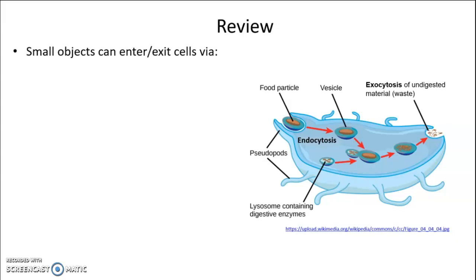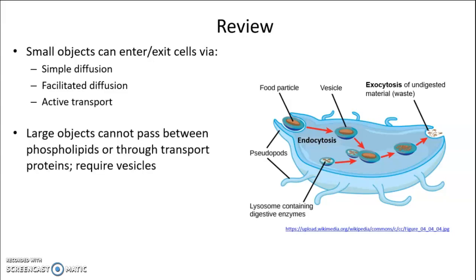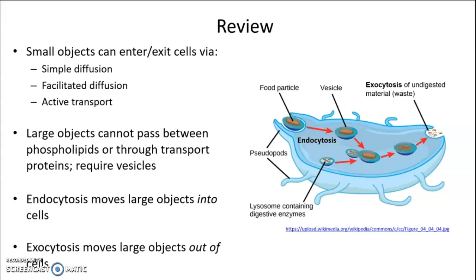To review: small objects can enter or exit cells via simple diffusion, facilitated diffusion, or active transport, moving either between the phospholipids or through a transport protein. But large objects cannot pass through phospholipids or transport proteins, so they require vesicles. Endocytosis moves large objects into cells, and exocytosis moves large objects out of cells. Now you've learned all the different types of membrane transport processes. Until next time, take care of yourself, take care of each other.